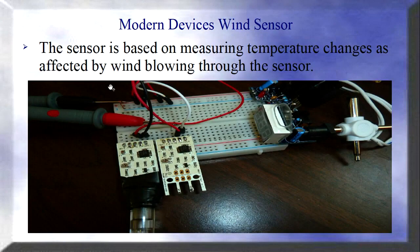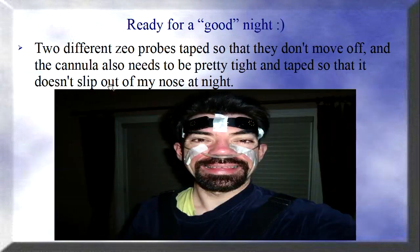Then I found a wind sensor. There's a little heating element and next to it is a heat detector. Depending on how much wind goes in between, one gets more or less hot — that's how you can tell the wind going through it. I put a little tube, and that tube goes to the cannula — that's kind of a way to measure breathing.